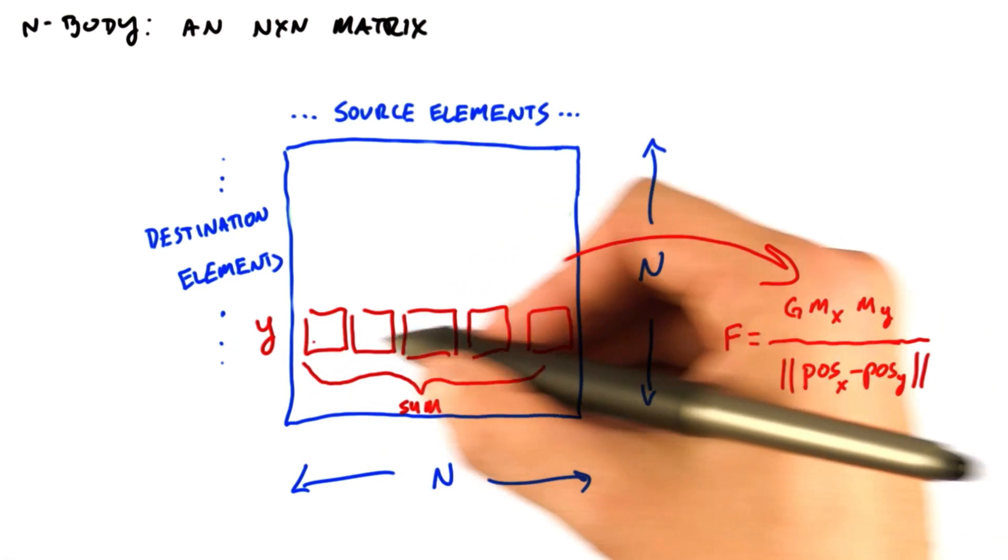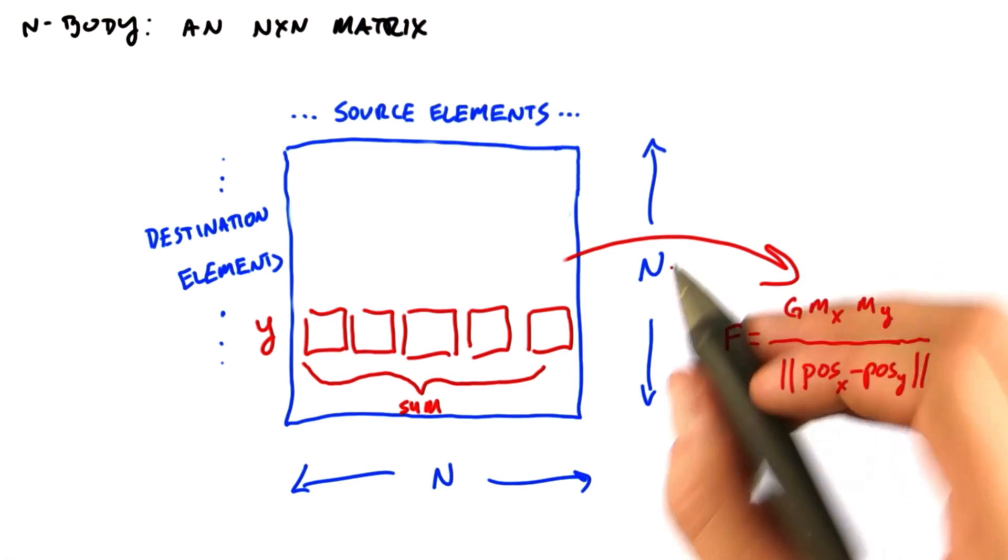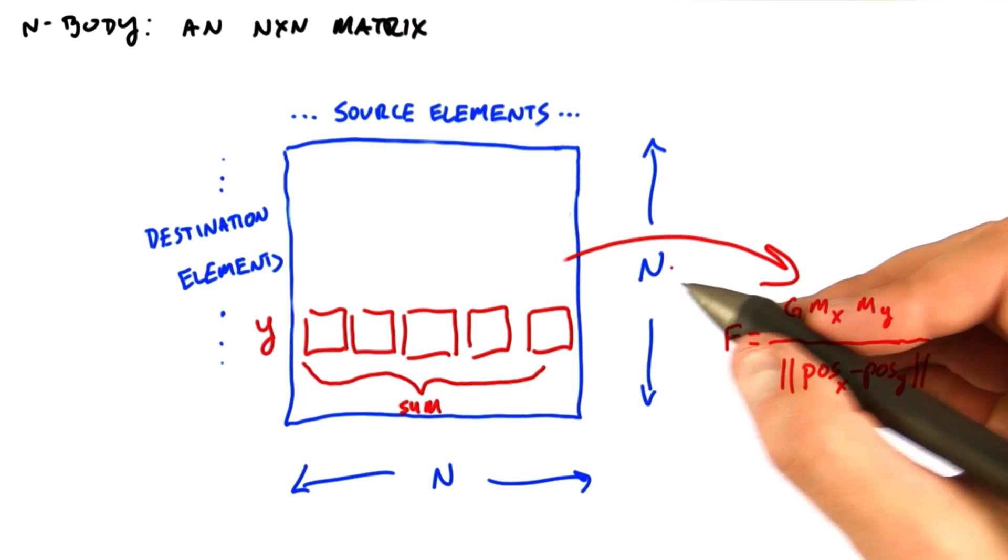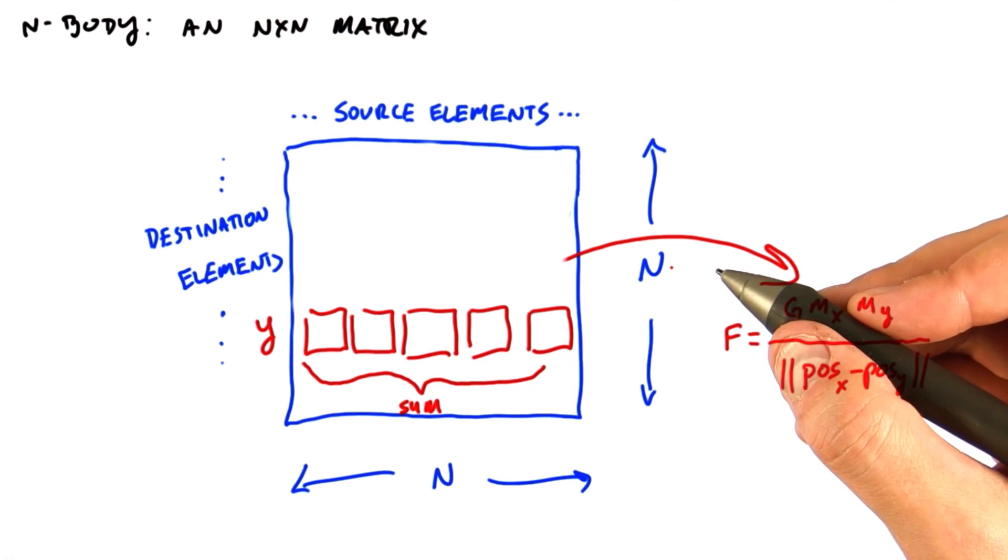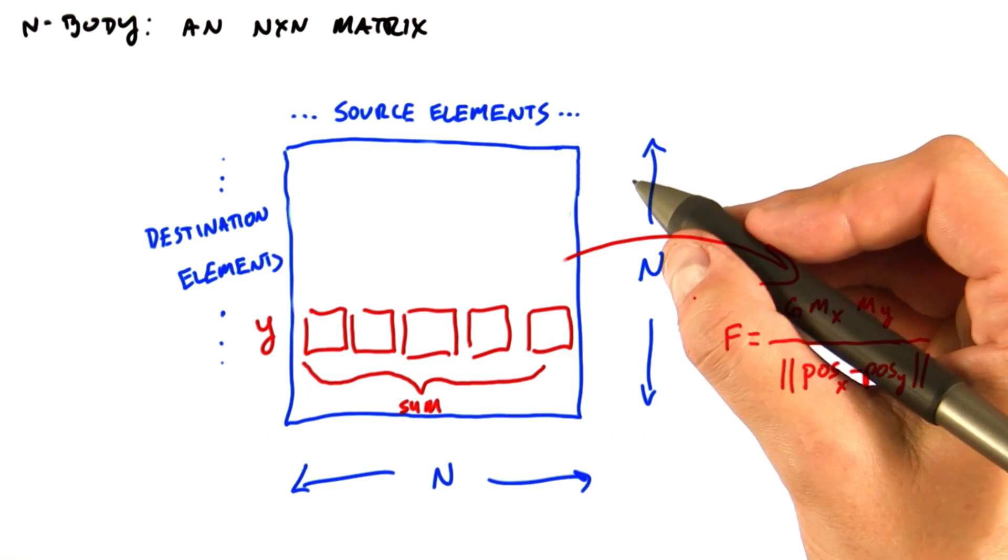Then we have to calculate n reductions of n forces also in parallel. Since we want to run this computation on tens to hundreds of thousands, maybe even millions of elements, we can see that we have a lot of parallelism to exploit.